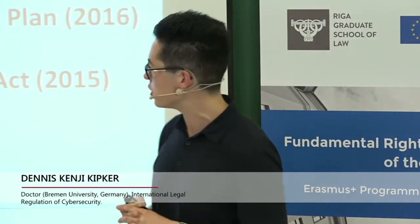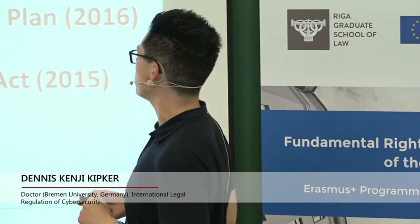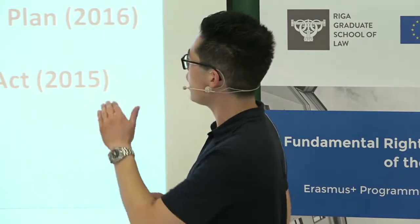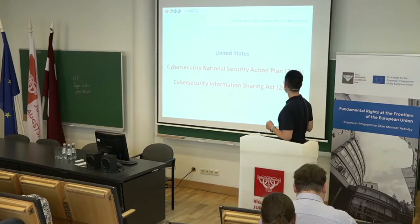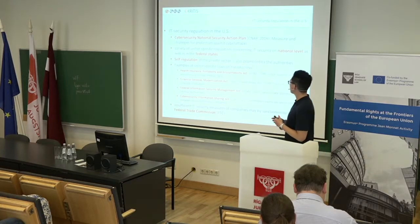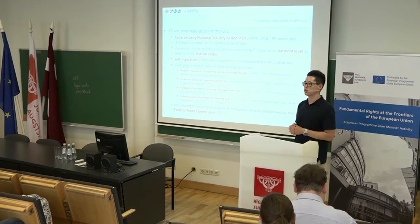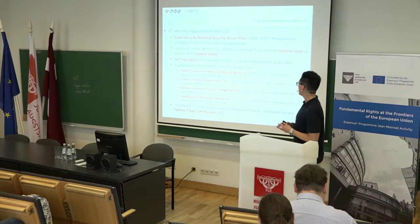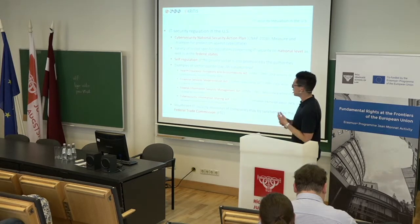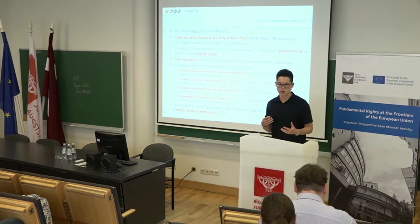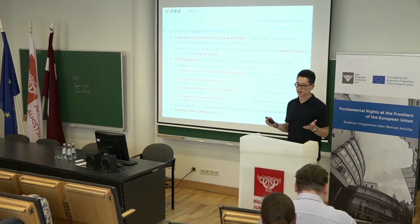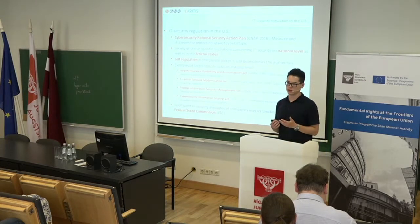Finally, we'll talk about United States law. There we have the Cyber Security National Security Action Plan — CNAP — which is the Cyber Security Strategy of the United States, and the Cyber Security Information Sharing Act from 2015. CNAP defines measures and strategies for the protection of individuals as well as companies against cyber attacks. There is a variety of sector-specific regulations in the United States concerning cyber security on the national level as well as on the federal state level, making the situation quite complicated.